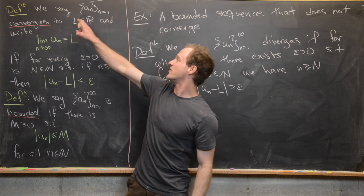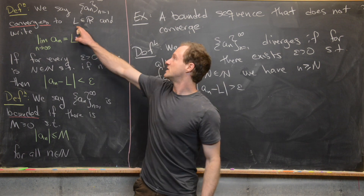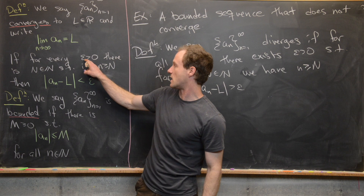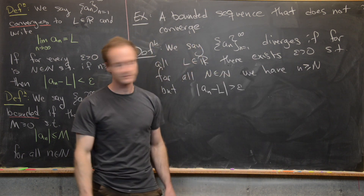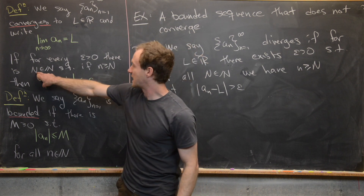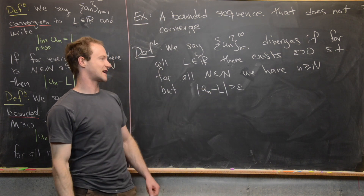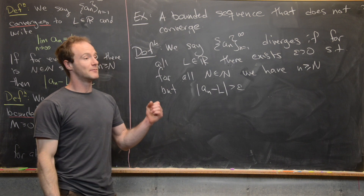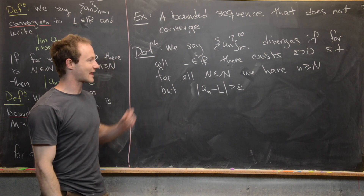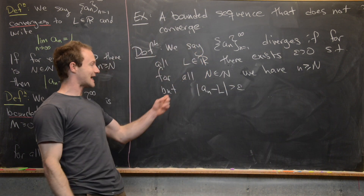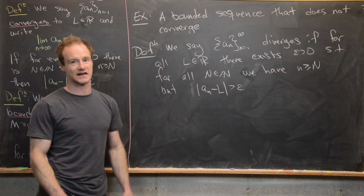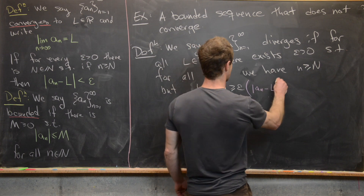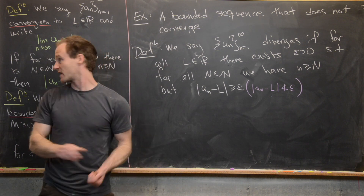The sequence a_n diverges if for all real numbers L, there exists epsilon > 0, such that for all natural numbers N, there exists little n ≥ N such that |a_n minus L| ≥ epsilon. The original definition had a 'there exists L,' changed to 'for all L'; 'for all epsilon' becomes 'there exists epsilon'; 'there exists N' becomes 'for all N'; and the conclusion is negated from |a_n − L| < epsilon to |a_n − L| ≥ epsilon.